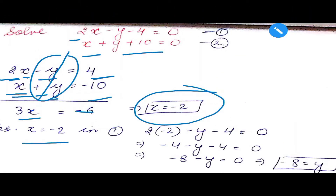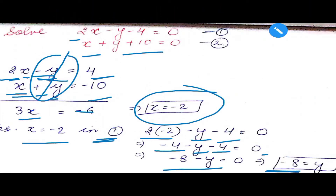Now that we have one variable's value, substitute into any equation to find the other. Substituting x equals minus 2 into the first equation: 2 times (minus 2) minus y minus 4 equals 0, giving minus 4 minus y minus 4 equals 0, so minus 8 minus y equals 0, meaning y equals minus 8. So the solution is (minus 2, minus 8).